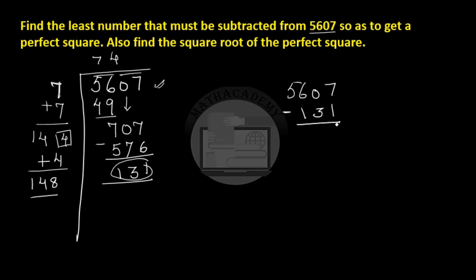Let us see that: 5607 minus 131 gives us 5476, and 5476 is nothing but the square of 74.